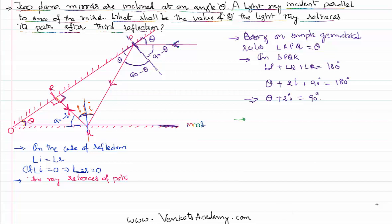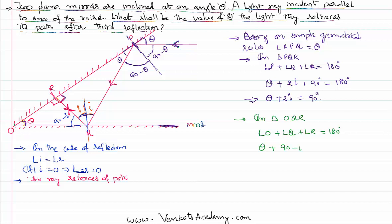Now taking triangle OQR, the sum of angles is again 180 degrees: angle O plus angle Q plus angle R equals 180. Angle O is theta, angle Q is 90 minus i, and angle R is 90 degrees. This gives theta plus 90 minus i plus 90 equals 180, which simplifies to theta minus i equals 0, meaning i equals theta.